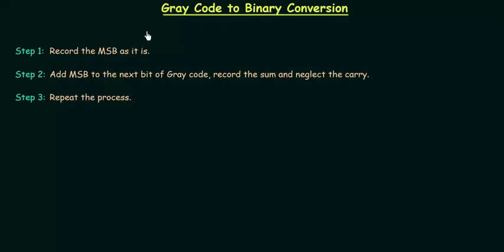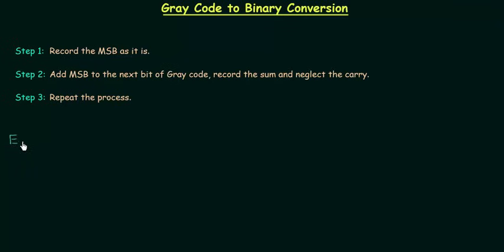In the last lecture we completed binary to gray code conversion. In this lecture we will learn gray code to binary conversion. There are three steps involved in the conversion and I will try to explain these three steps by the help of one example. So let's move to example number one.